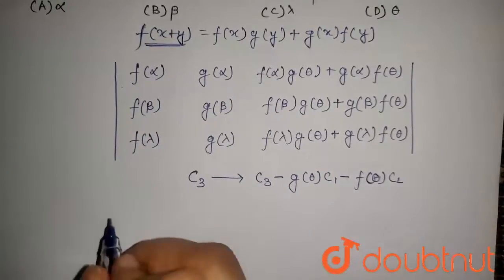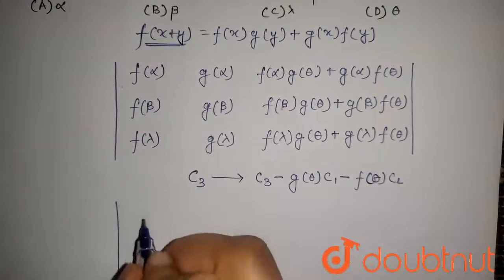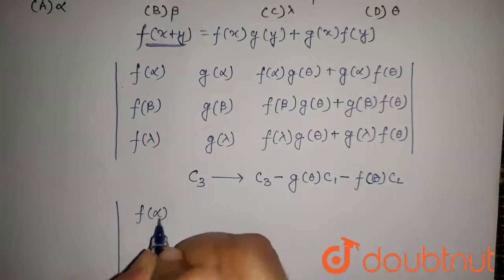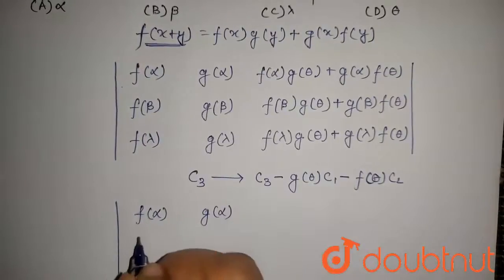So if we apply this, we get the first and second column will be same, so it will be g alpha.